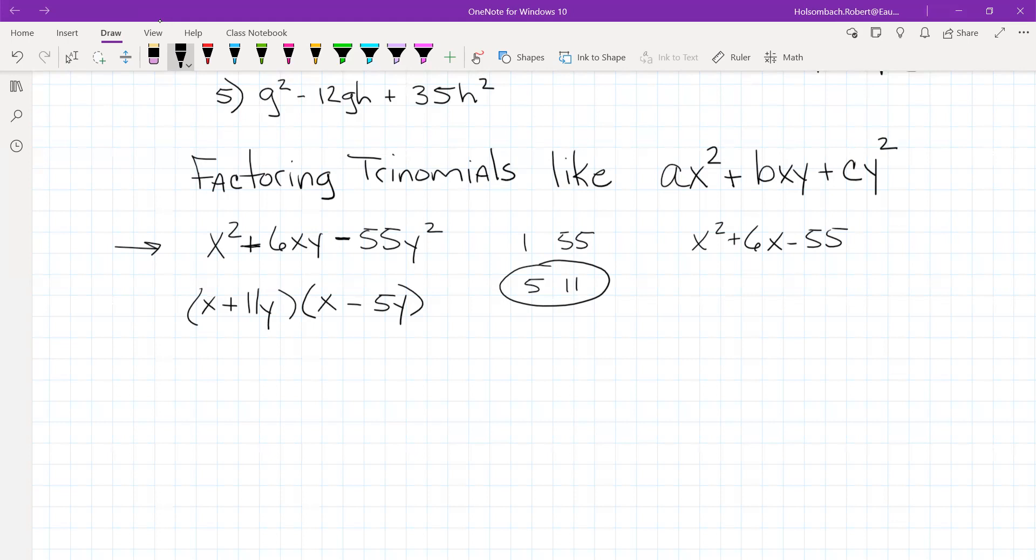All right. So try m squared plus 6mn minus 27n squared.